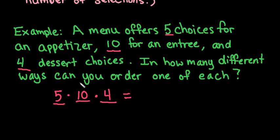I tend to multiply the smaller numbers together first if I don't have a calculator. So 5 times 4 is 20, and then multiplying it by 10 just makes it so that there are 200. So there are 200 possible ways of ordering one of each item.